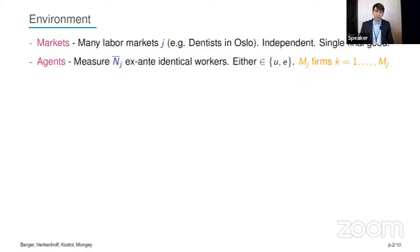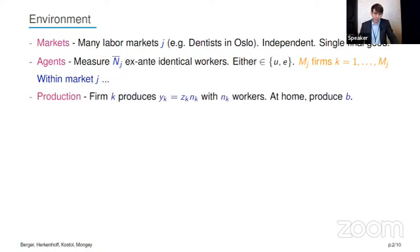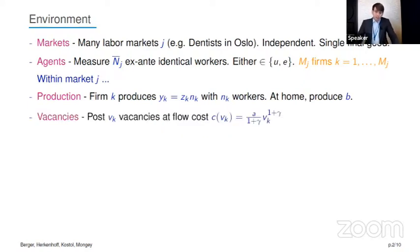Within each labor market j, there's a measure of ex-ante identical workers, after which they're either employed or unemployed and may have heterogeneous wage profiles based on their contacts. There's a finite number mj of firms indexed by k, taking values one through mj within market j. Firm k produces with a linear production technology: Zk is their productivity, and they have a stock of workers nk. At home, workers produce a homogeneous amount b. Firms are optimizing — they post vk vacancies, solving for a Nash equilibrium at a flow cost c of vk, where convexity is governed by parameter gamma. The combination of a firm's productivity and the convexity of vacancy posting costs pin down firm size in equilibrium.